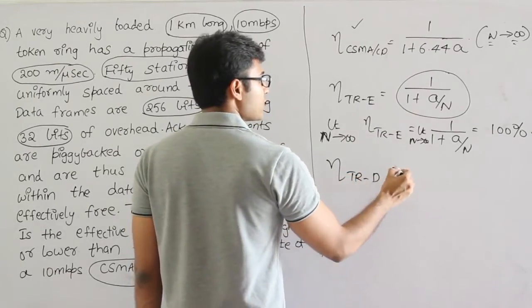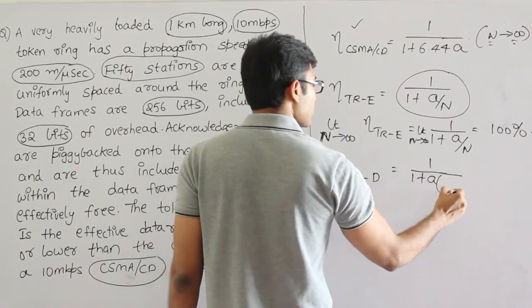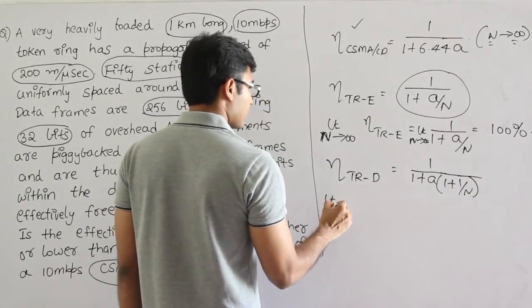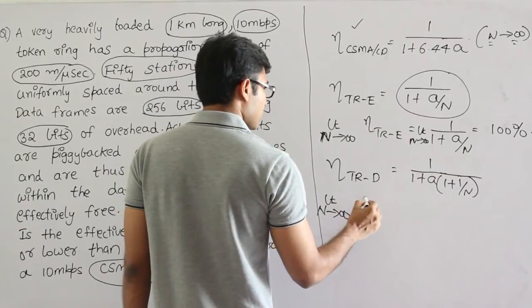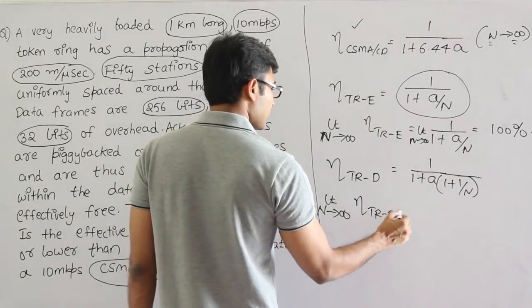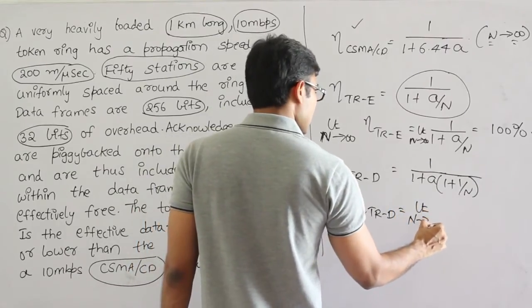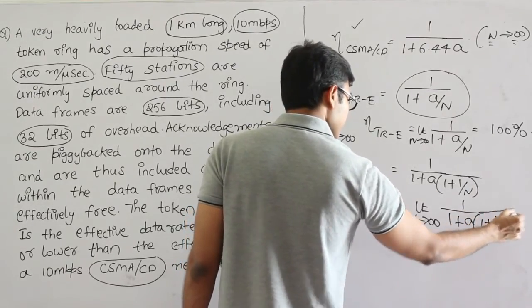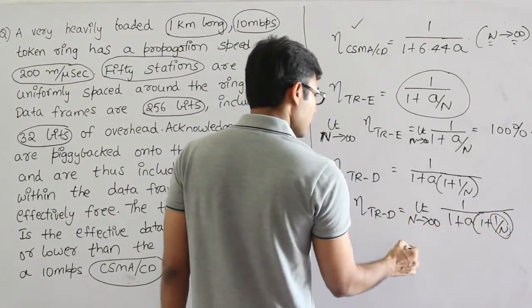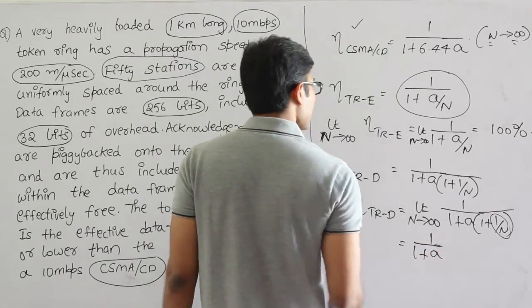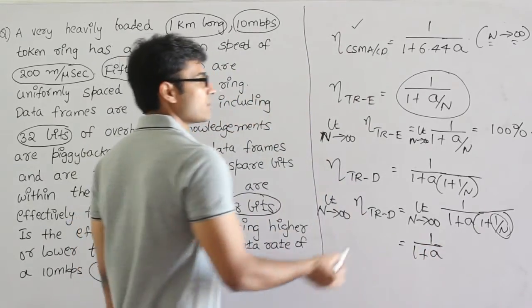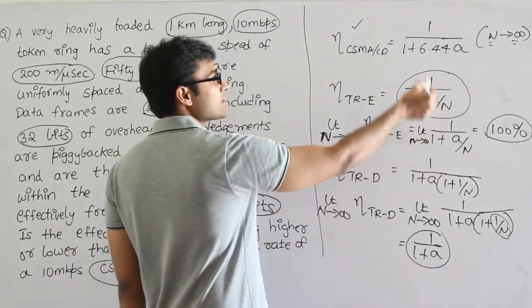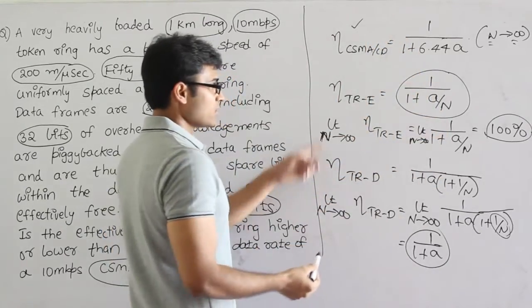And what about efficiency of Token Ring in delayed token reinsertion? It is actually 1 upon 1 plus A times 1 plus 1 by N. And limit N tends to infinity, 1 upon 1 plus A times 1 plus 1 by N. So this entire factor goes to 0. Therefore it is going to be 1 upon 1 plus A. So either it is early token reinsertion - in early token reinsertion efficiency is 100%. In delayed token reinsertion efficiency is 1 upon 1 plus A.